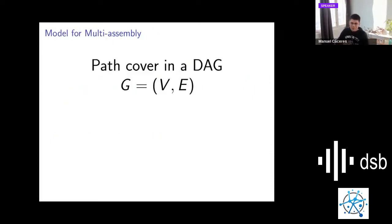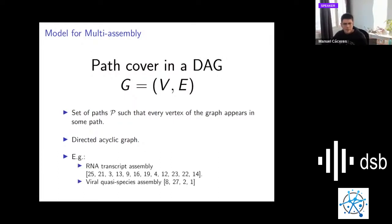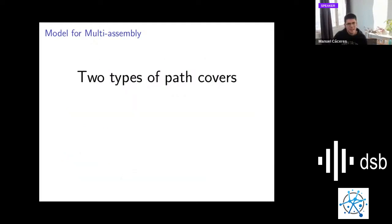The model that we are going to use for multi-assembly is a path cover in a DAG. A path cover is just a set of paths, such that every vertex of the graph belongs to some of these paths. And a DAG is a directed graph that doesn't have directed cycles. For example, this is used in RNA transcript assembly and also in viral quasi-species assembly.